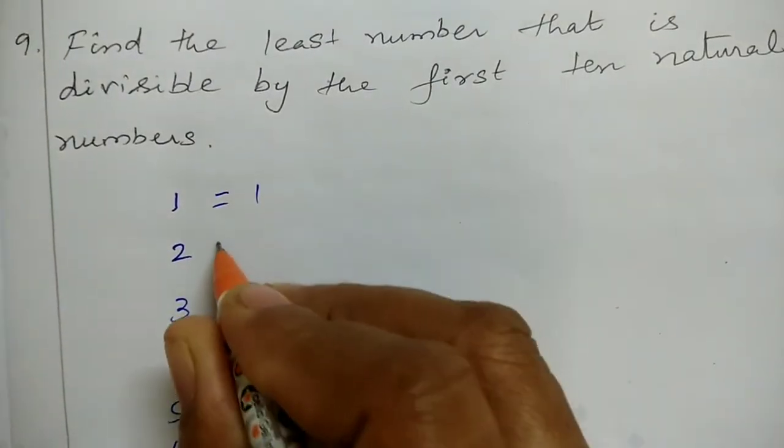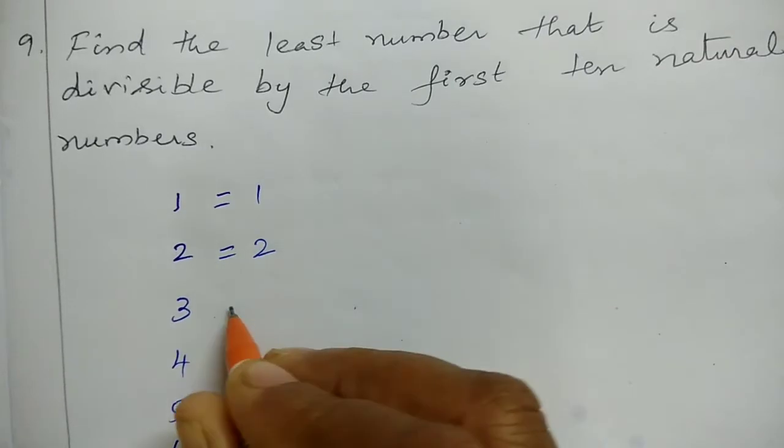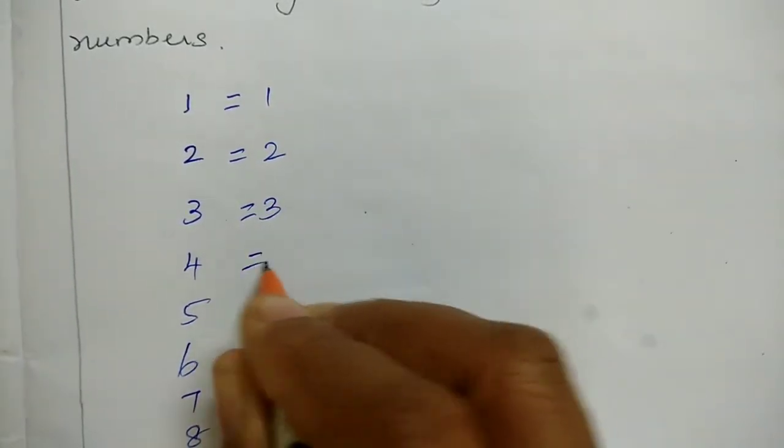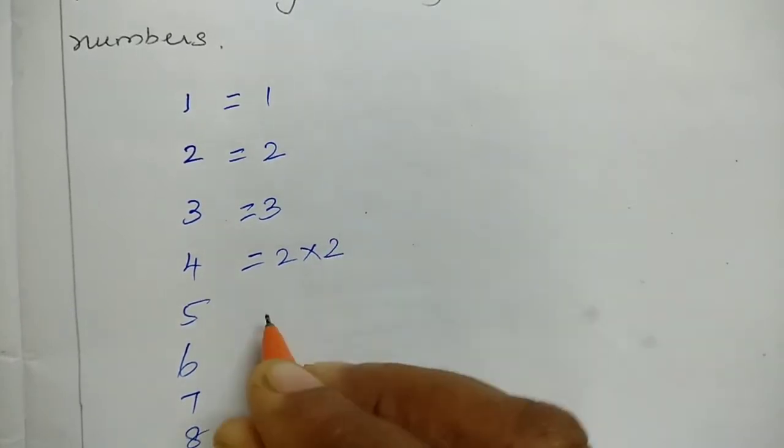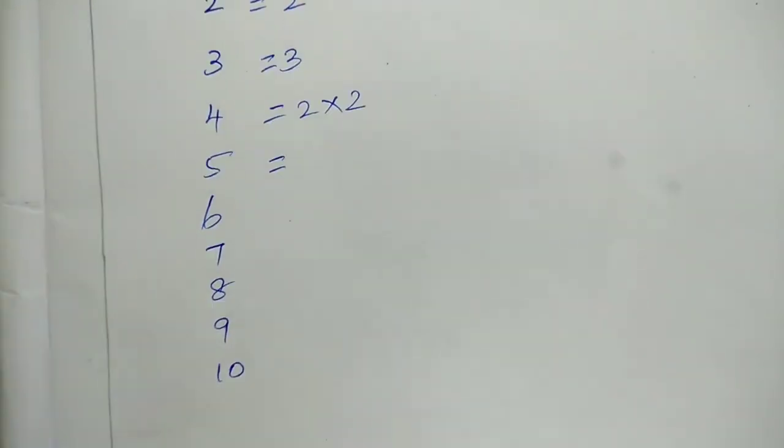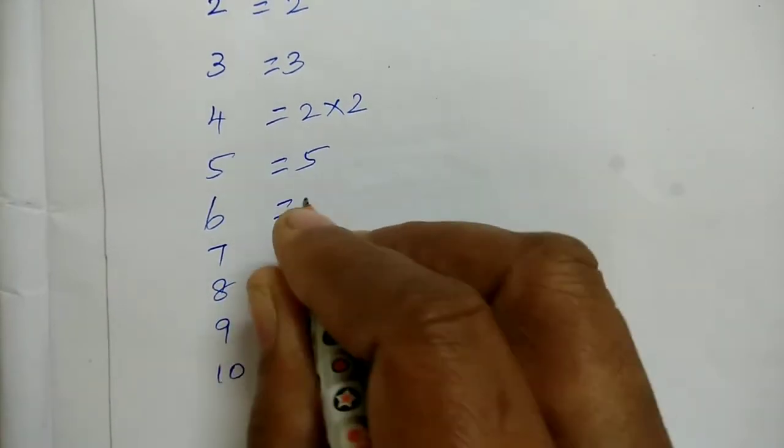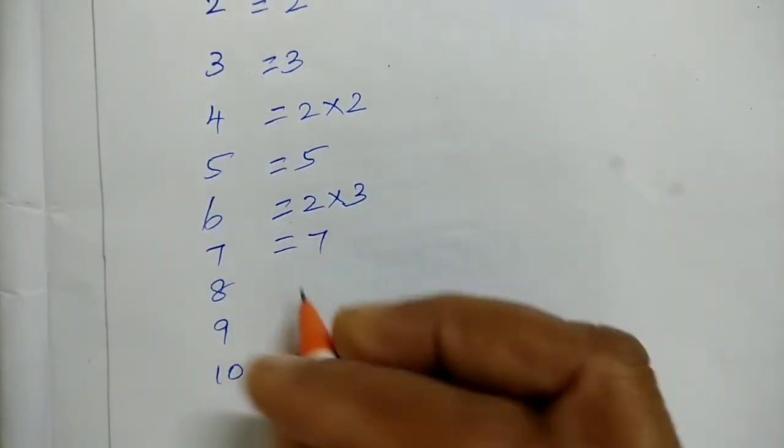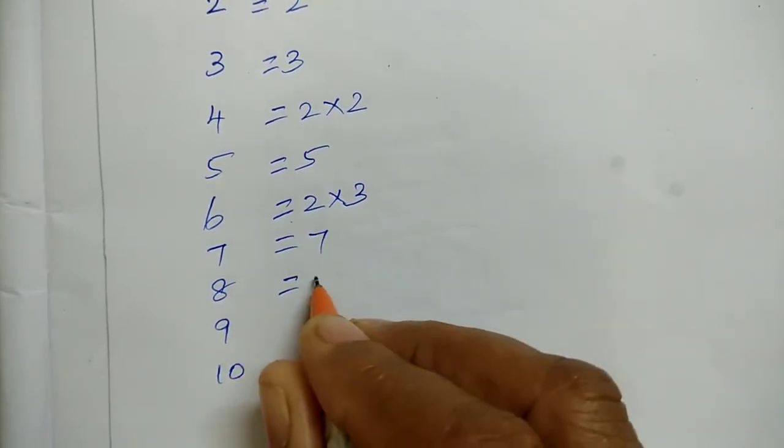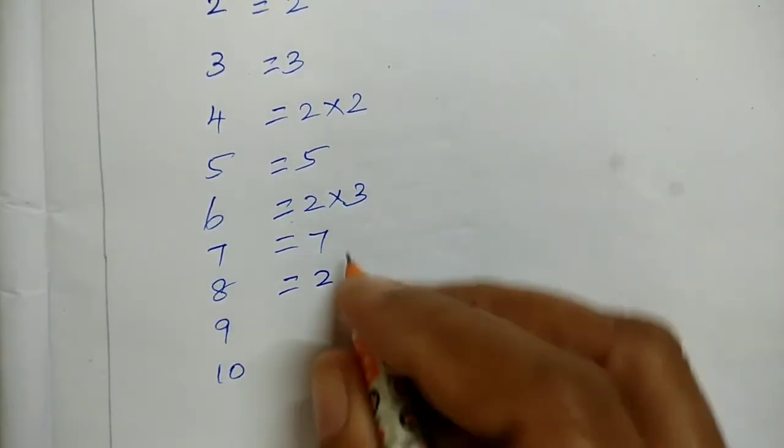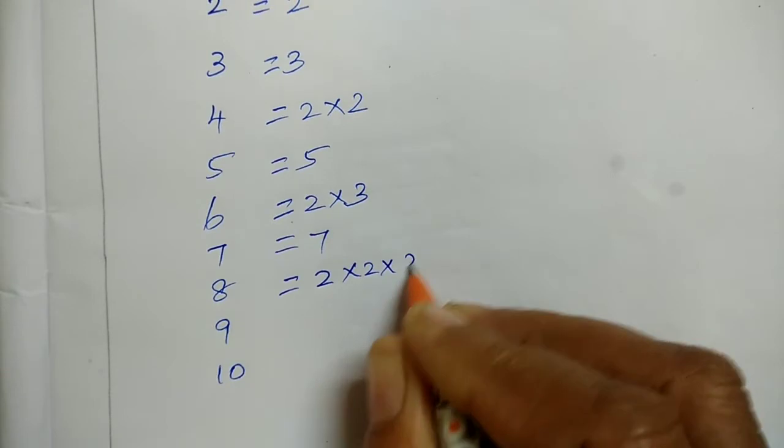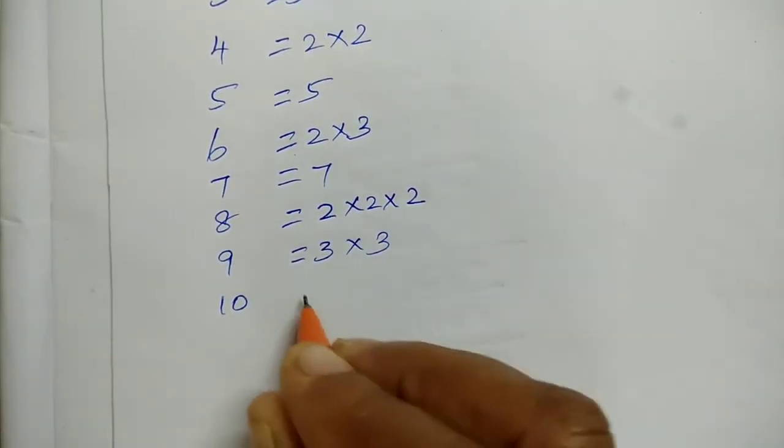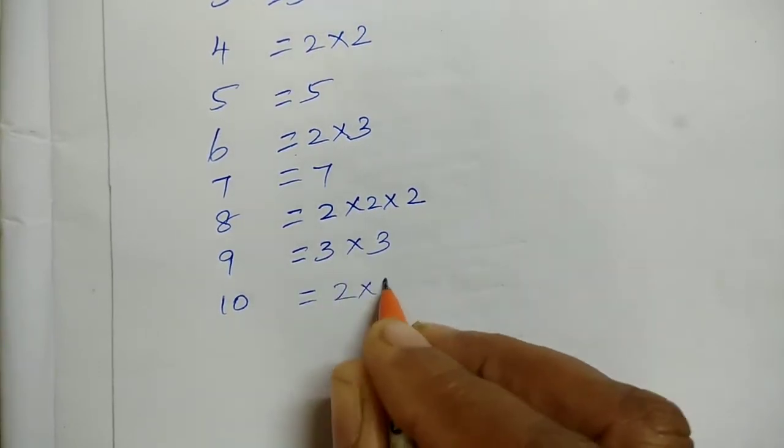Now I am finding LCM, so for this number, the first factors are: 1 is 1, 2 is 2, 3 is the same 3, 4 is 2 into 2, 5 is the same 5, 6 is 2 into 3, 7 is 7, 8 is 2 into 2 into 2.